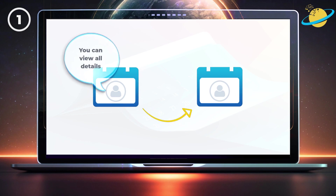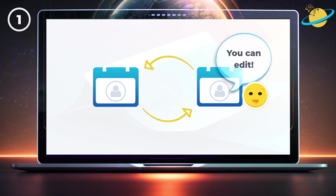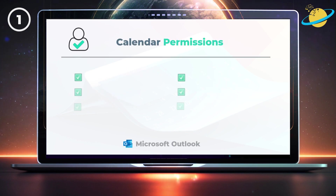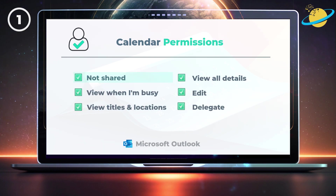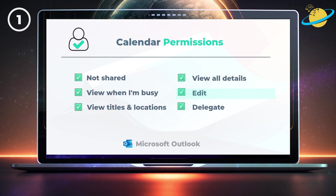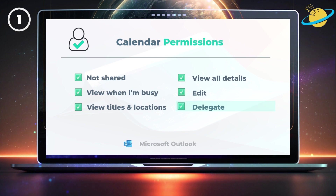In Outlook, you can share your calendar with others and allow other people to access your calendar too. There are six permission levels for calendar sharing. 'Not shared' means you can't see or interact with any events in their calendar. 'View when I'm busy' means you can see when they're available, but you can't see any of their events. 'View titles and locations' means you can view events in their calendar, but only the title and location. 'View all details' means you can access additional information such as attendees and descriptions. 'Edit' means you can modify the events in their calendar, but this only works with calendars they created. And being a delegate allows you to edit their events, but also schedule meetings and respond to meeting requests on their behalf. As a delegate, you can only schedule meetings on their primary calendar.